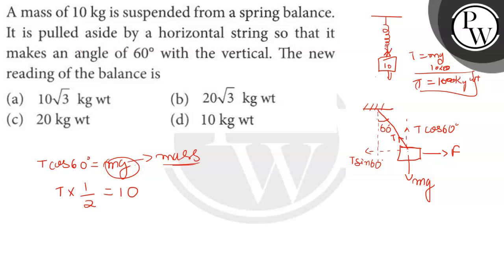Here it is not 100, it is 10. So from here we get T equals 20 kg weight. So option C is our correct answer. Thank you, students.